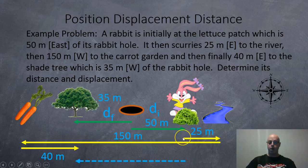So the distance is easy, just add up all the paths taken by the rabbit. 25 plus 150 plus 40, that's a total of 215 meters. How about the displacement? Well, the rabbit started off 15 meters to the east, ended off at 35 meters to the west, so the displacement is going to be 85 meters to the west.